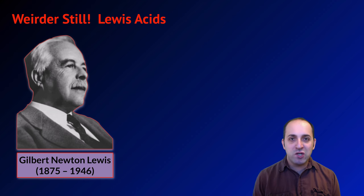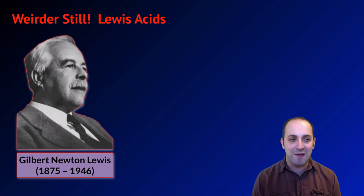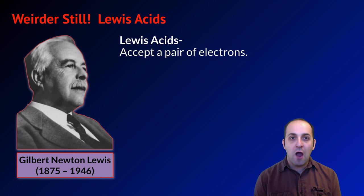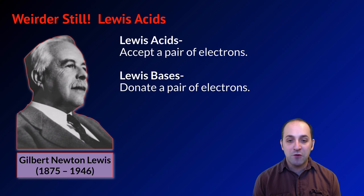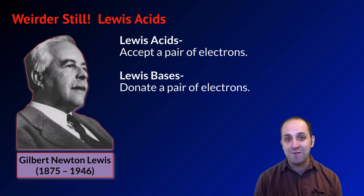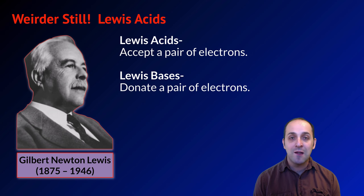There's even a weirder definition of acids and bases, which is the Lewis acid-base definition, named after Gilbert Newton Lewis, who advanced this definition. A Lewis acid accepts a pair of electrons, and a Lewis base donates a pair of electrons. You really don't need to worry too much about the Lewis definition of acids and bases, but you should be aware that it exists.